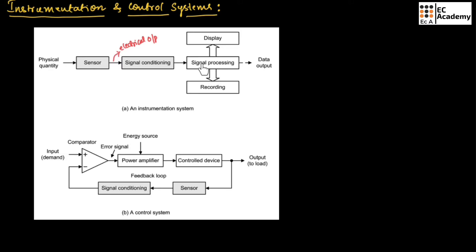Once the signal is processed, the output is given in the form of data output. There may be a requirement to display the result, and the result can also be recorded. Usually the signal processing stage accepts signals in digital form. That is why an additional stage between signal conditioning and signal processing — analog to digital converter — may be required. At the output stage, we might require one more additional stage, which is a digital to analog converter.